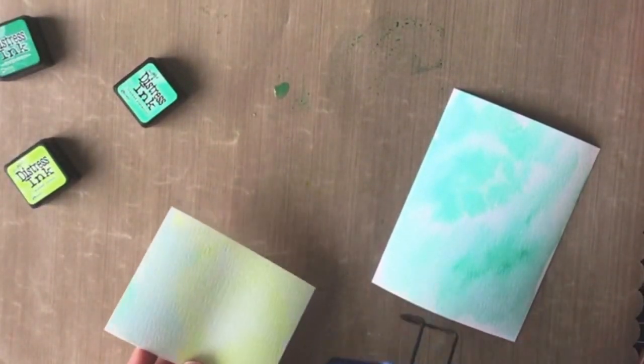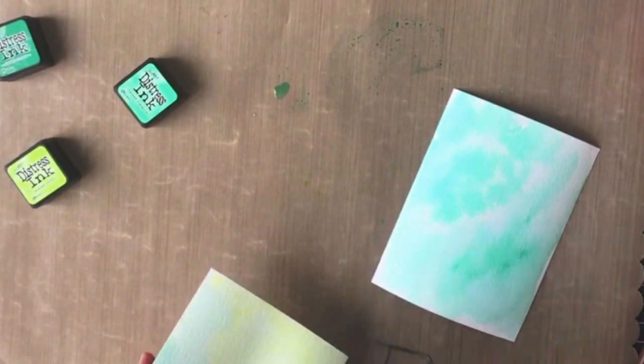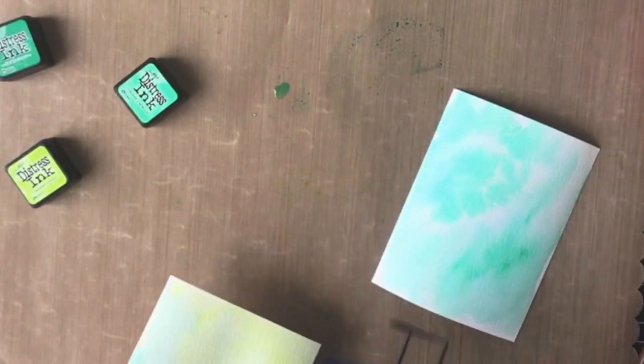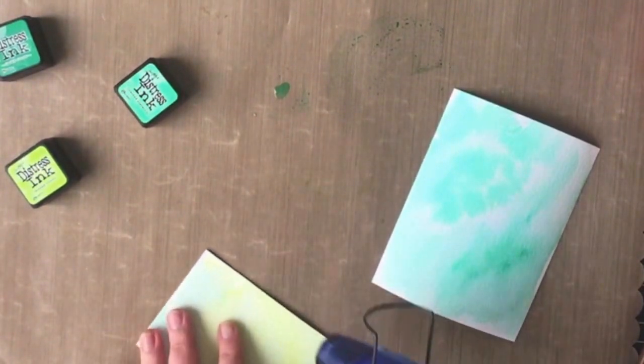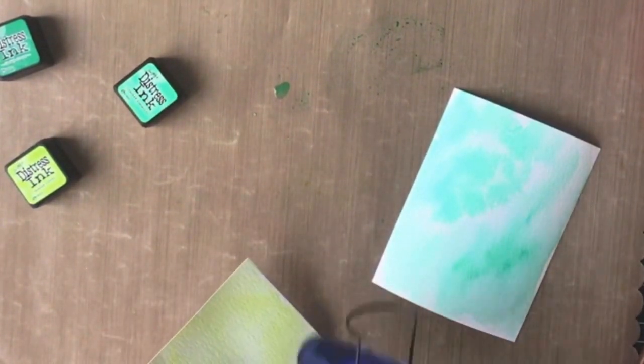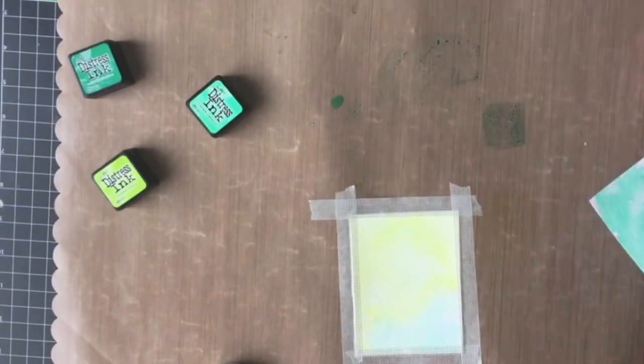Because I'm too impatient to wait for these to dry on their own I am adding some heat using a heat tool to help quicken the drying process and I'm heating both sides of the cardstock because that's going to help the cardstock dry flat.